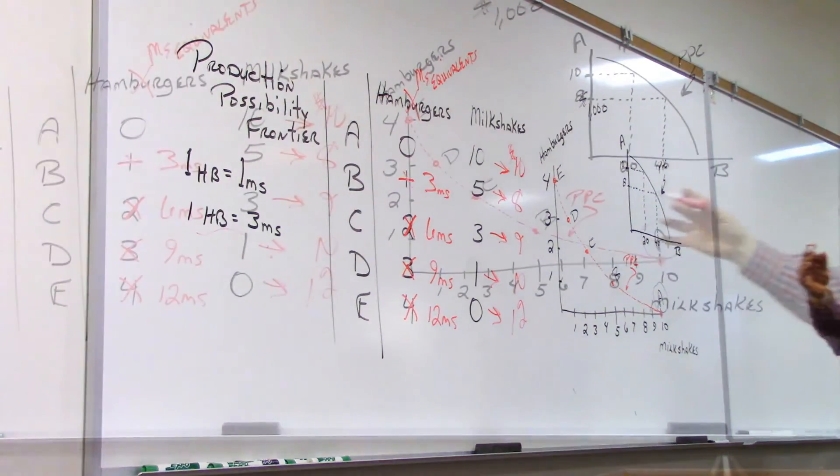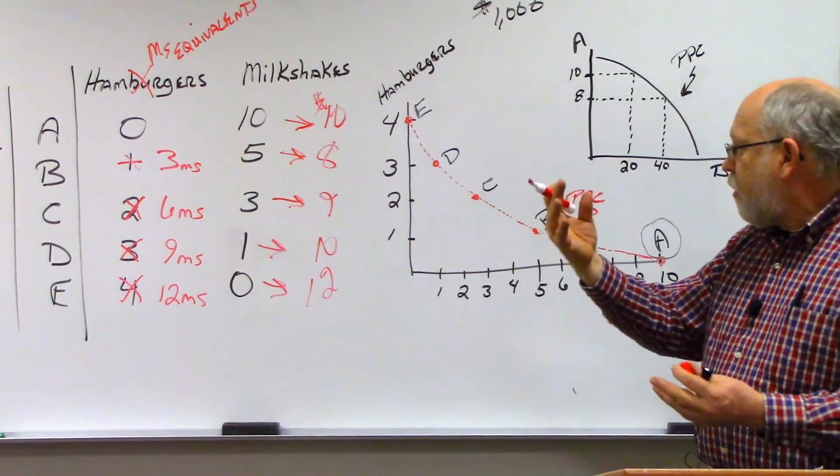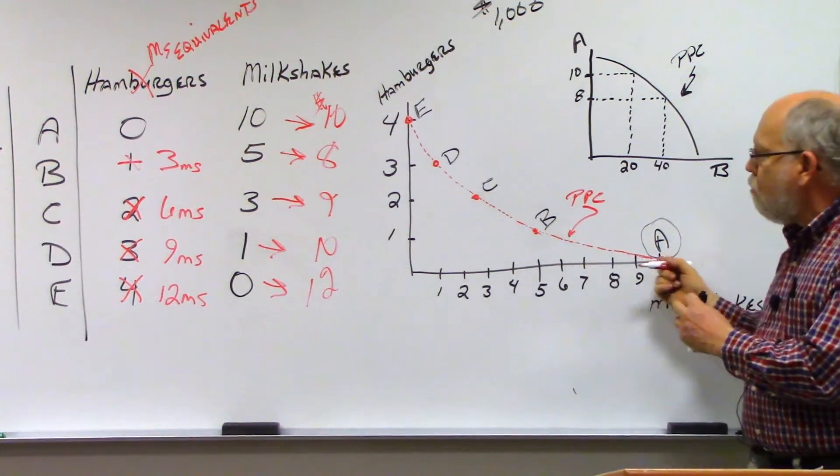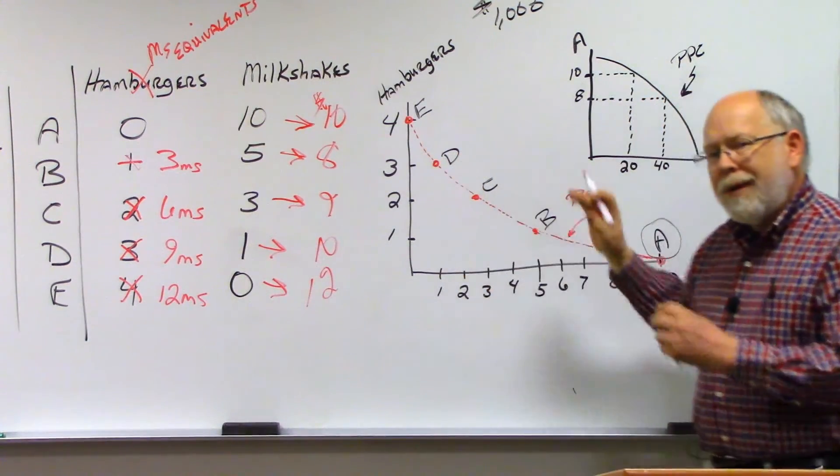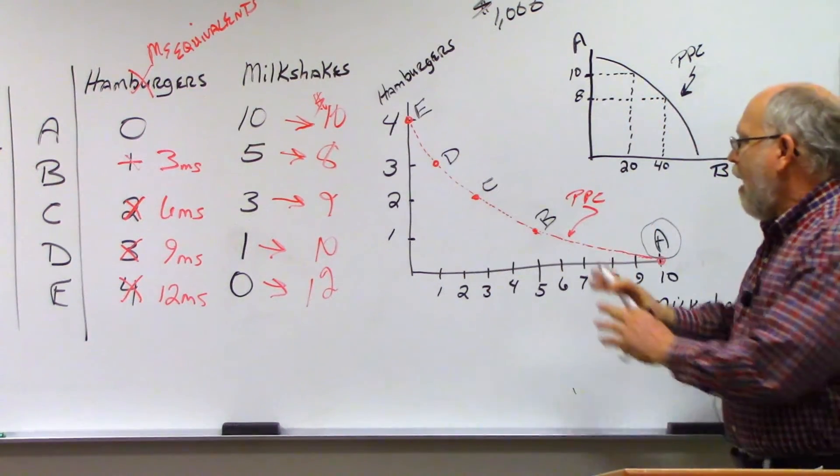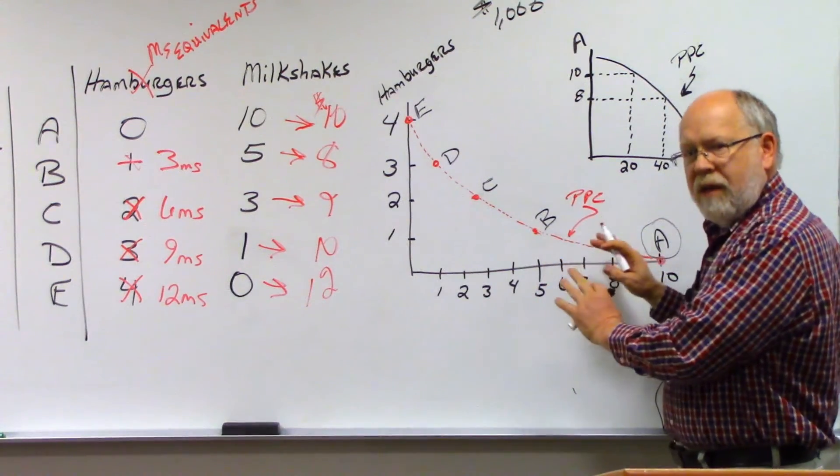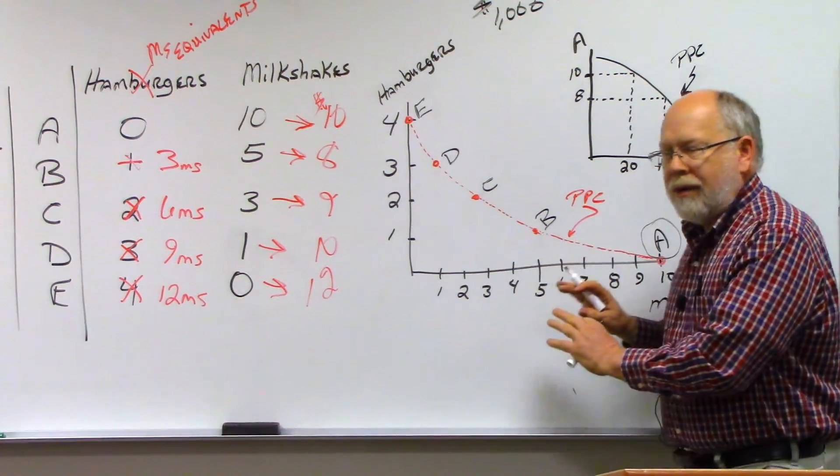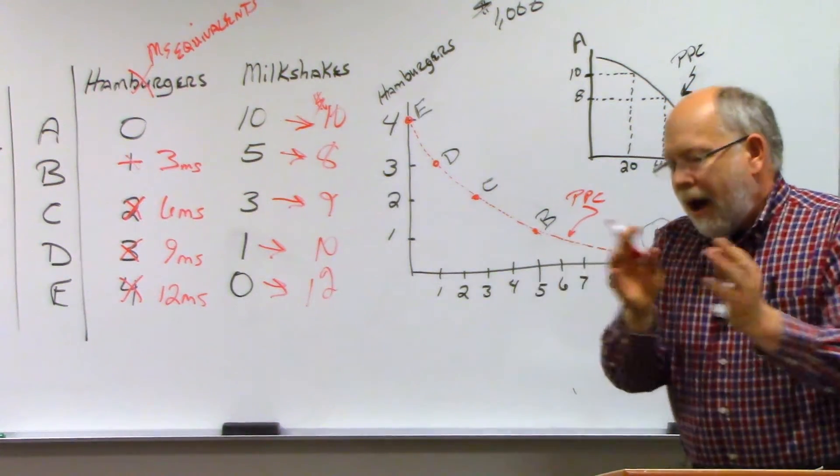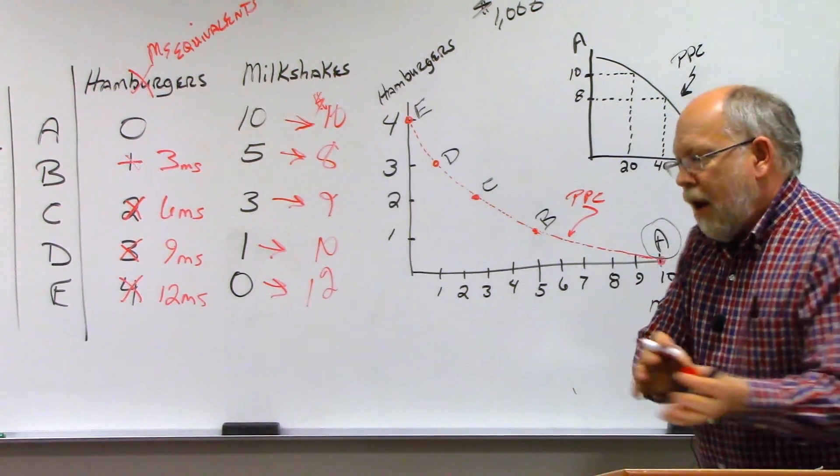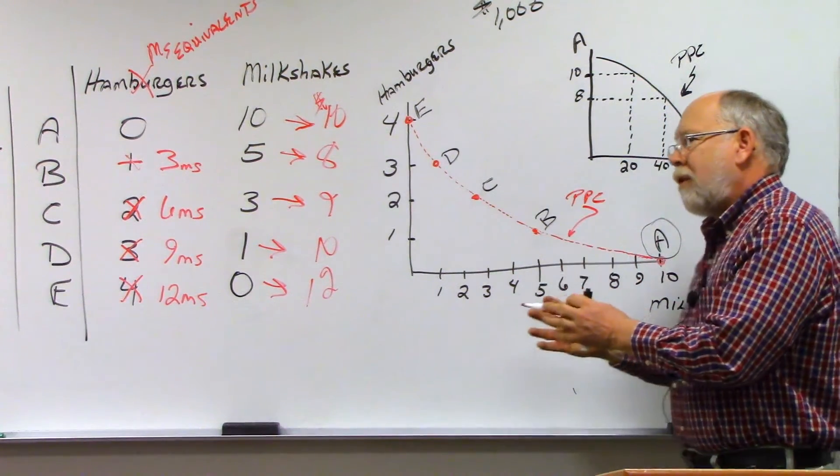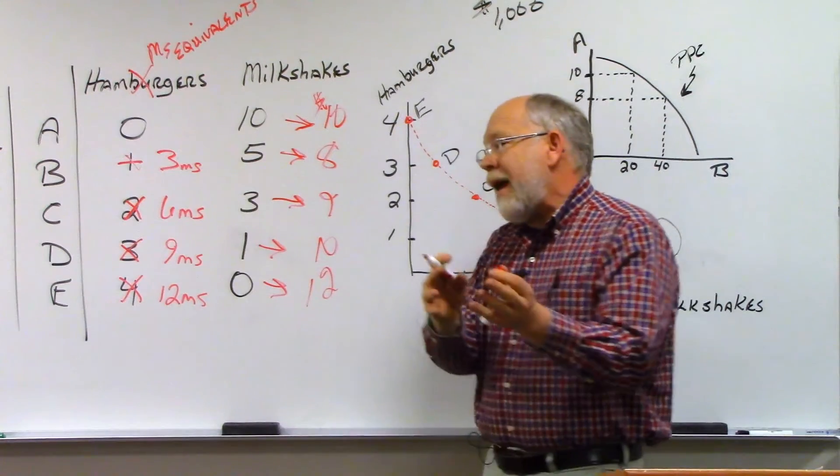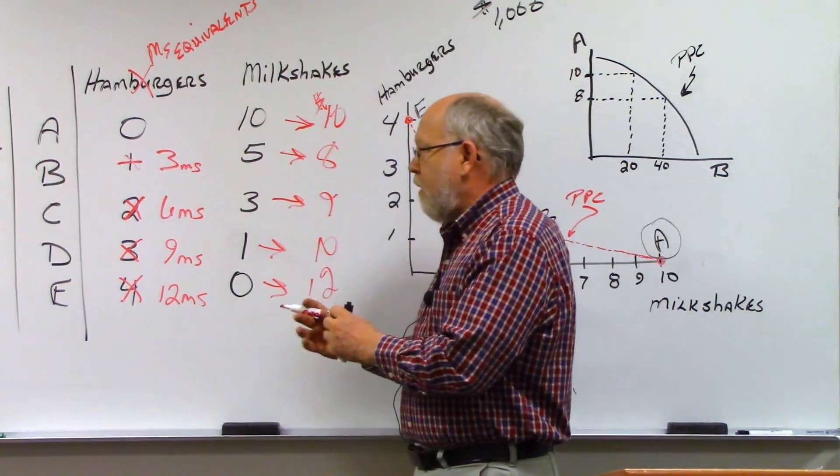Now looking at this, when the price changes, that says we probably are going to move on our production possibility curve. Production possibility curves have no prices in there. It has nothing to do with prices. It simply says, how much can I produce of unit A? How much can I produce of unit B? And what do I have to give up of unit A to produce more of unit B and vice versa?